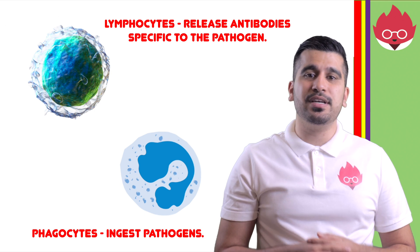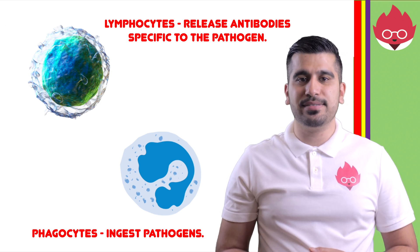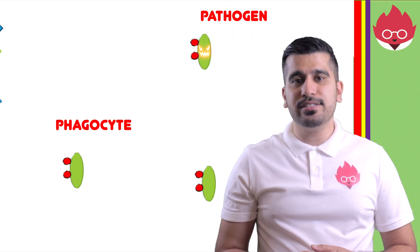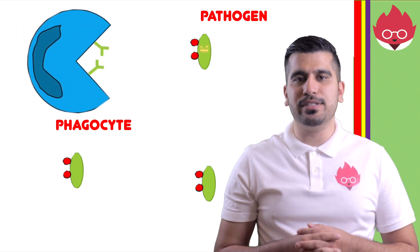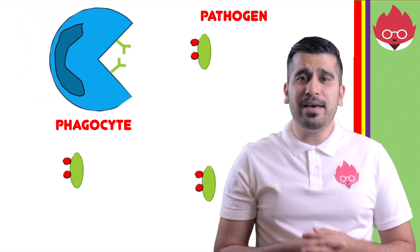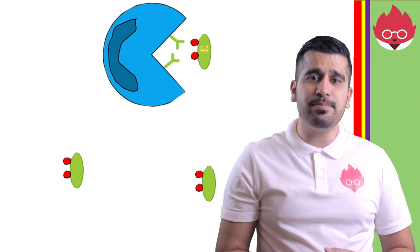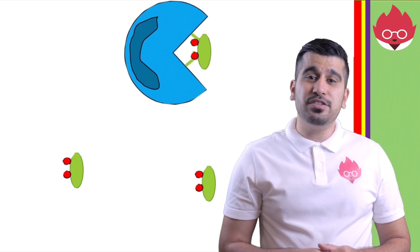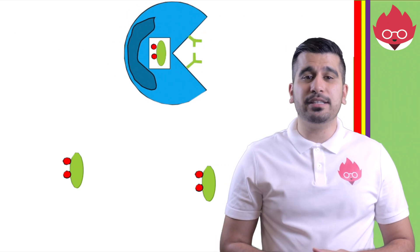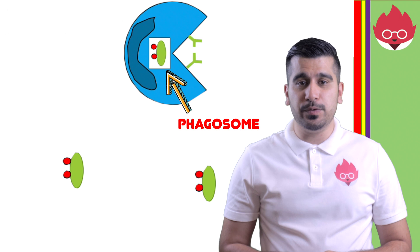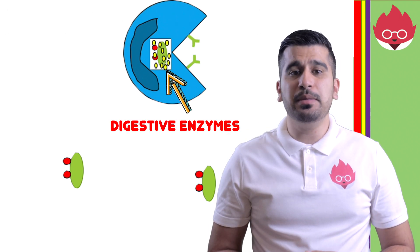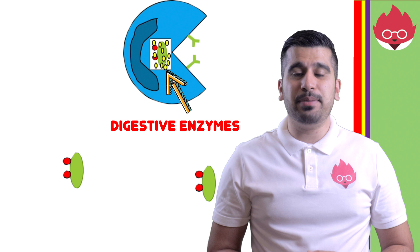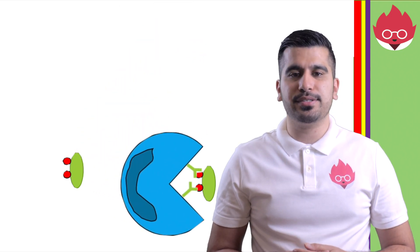There are two types of white blood cells: the phagocytes and lymphocytes. Phagocytes work by being attracted to the pathogen due to chemicals they secrete. The pathogen is then able to bind to receptors on the phagocyte. The pathogen is engulfed by the phagocyte, producing a phagosome. Lysosomes release digestive enzymes onto the phagosome, digesting the pathogen. The phagocytes are then free to repeat the process.